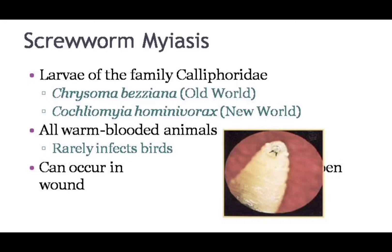Any warm-blooded animal including humans is susceptible to the infection. However, Skewworm Myasis is rarely seen in birds. Any open wound can become infected and is often characterized by a foul-smelling exudate and presence of larvae within the tissue.